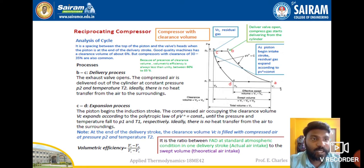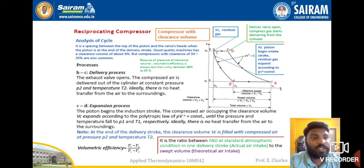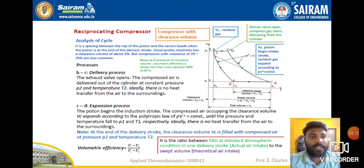In the PV diagram with clearance volume, V₂ = Vc (clearance volume). Process 1 to 2 is adiabatic/polytropic compression where PVⁿ = constant. Process 2 to 3 is the delivery stage where the delivery valve opens and compressed gas is delivered from the cylinder. Process 3 to 4 is the expansion: as the piston begins the intake stroke, the residual gas expands according to PVⁿ = constant. The effective swept volume is V₁ − V₂ = Vs.